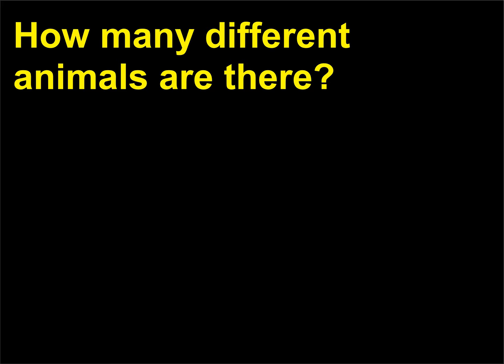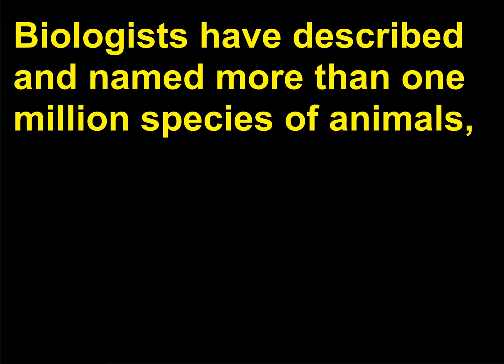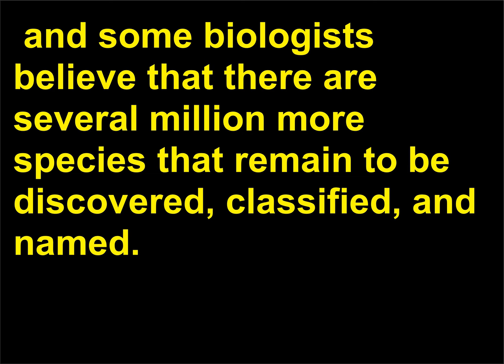How many different animals are there? Biologists have described and named more than 1 million species of animals. Some biologists believe that there are several million more species that remain to be discovered, classified, and named.